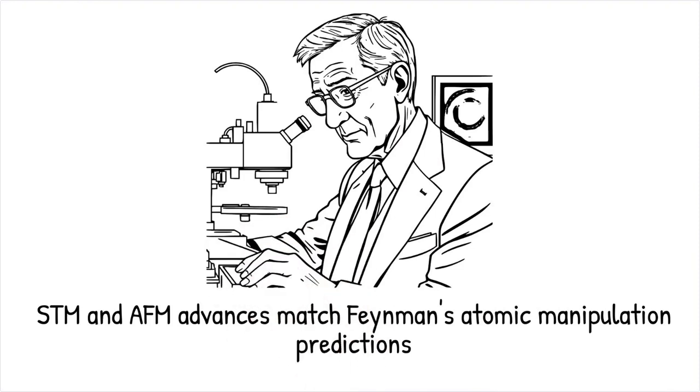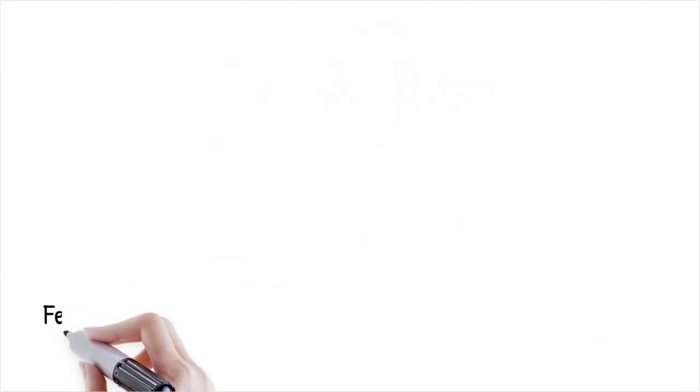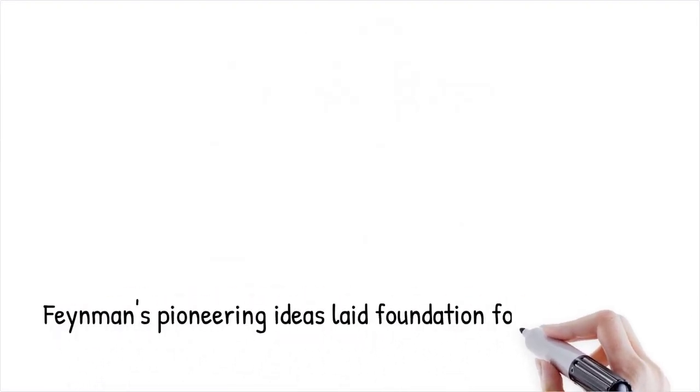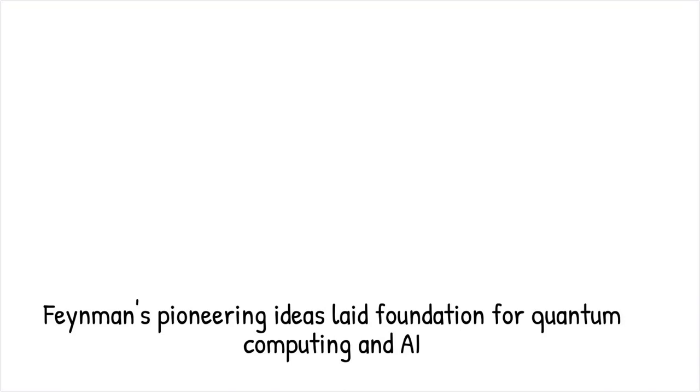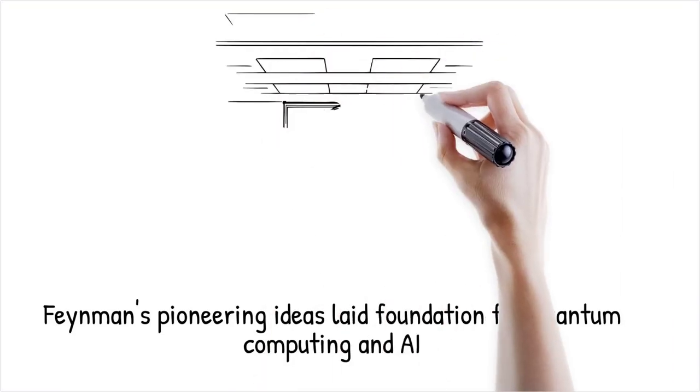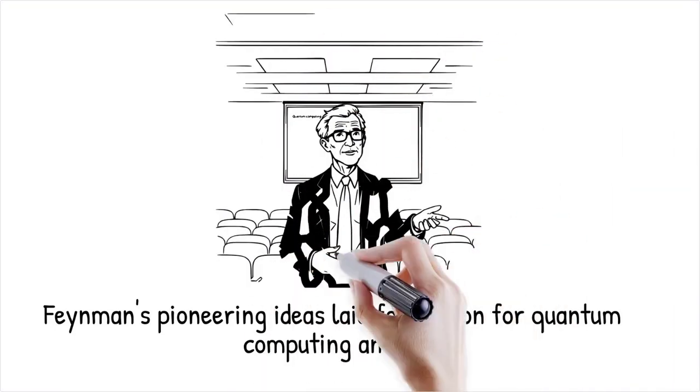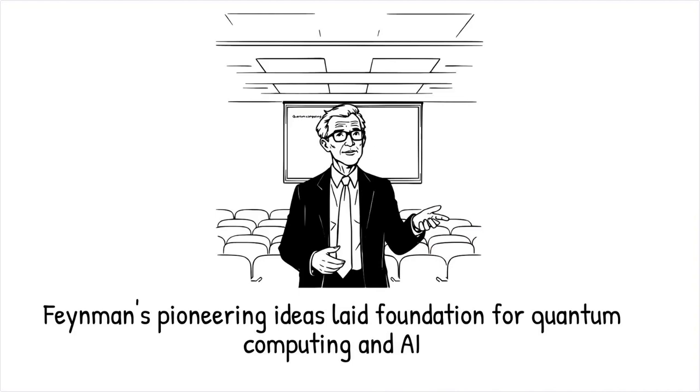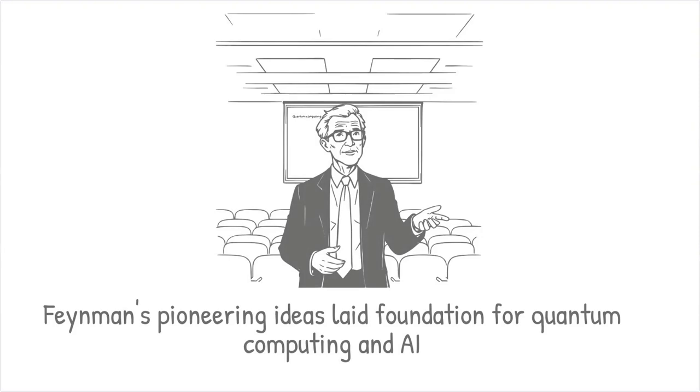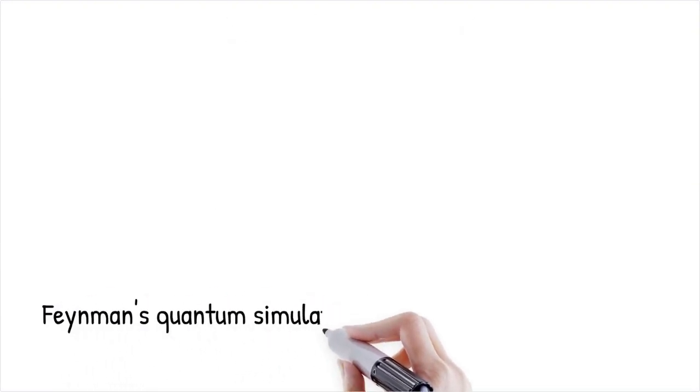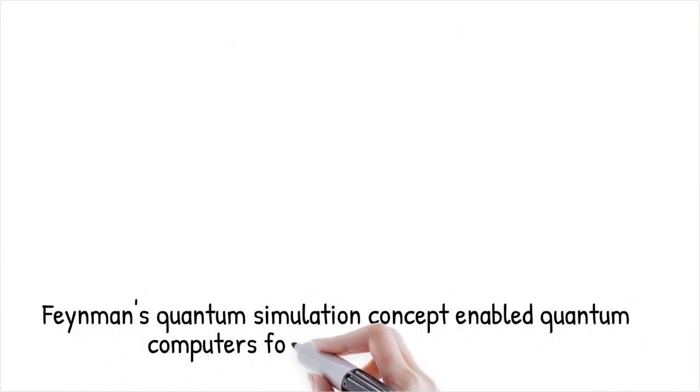Feynman was one of the first scientists to propose quantum computing, suggesting that quantum systems could simulate nature more efficiently than classical computers. His insights into quantum superposition and entanglement laid the foundation for today's quantum algorithms, quantum cryptography, and quantum artificial intelligence. He envisioned a future where quantum systems solve complex problems in physics, chemistry, and computation, outperforming classical approaches.